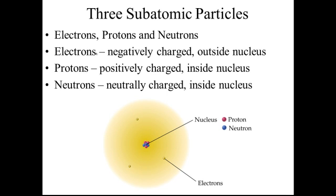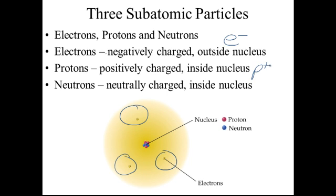Let's start with electrons. Electrons we usually abbreviate with an e and a little minus sign, since they're negative. The electrons are zipping around outside the nucleus — they're in the electron cloud. Protons we abbreviate with a little p and a plus sign, because they're positive. And neutrons are a little n and a zero, because they're neutral.